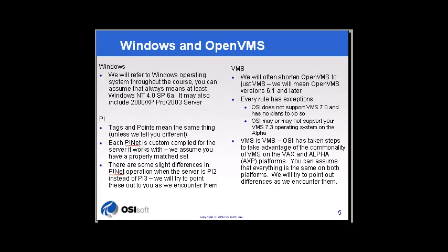We'll refer to the VMS operating system often during the class, and generally you can assume we mean OpenVMS version 6.1 and later. However, OSI does not support OpenVMS 7.0, and there are some limitations to supporting VMS 7.3 on the Alpha platform; we do support VMS 7.3 on the VAX platform. Generally, you can assume that VMS is VMS — we've taken steps to take advantage of the commonality between the VAX and Alpha platforms, so all features and functionality are the same on both platforms unless we tell you differently.